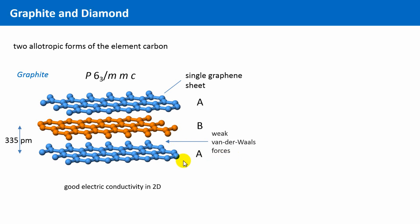So, this is the reason why graphite is in this direction, perpendicular to the sheets, a very bad electrical conductor. And it is also the reason why graphite shows, in total, a bad thermal conductivity.